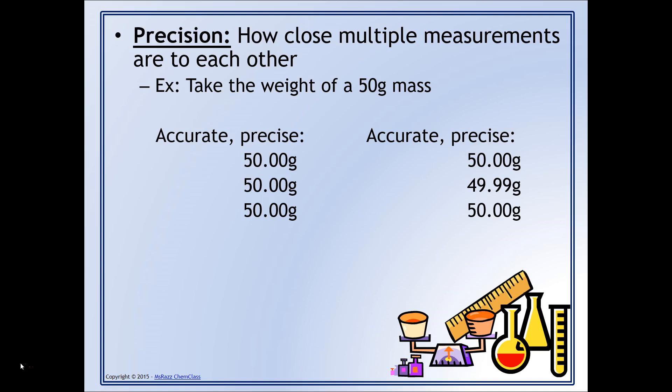However, it is possible to be not accurate yet to be precise. So what that means is your data would look something like this. Notice that this data is not accurate because it's not close to that 50 grams, but it is precise because we got the same measurement over and over again.